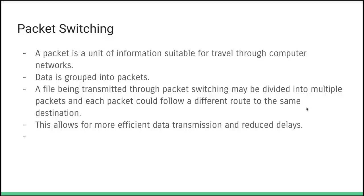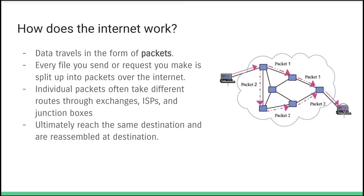This method of transmitting information is called packet switching. A packet is a unit of information. Your data is divided into multiple packets, they follow different routes, and arrive at the same destination. Routers help those traveling packets reach their destination in the most efficient way possible — they're like relays on the internet that help packets get from one destination to another.